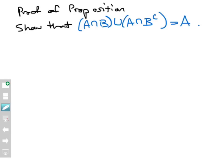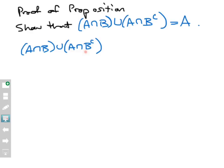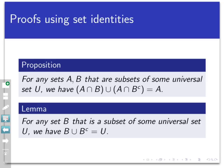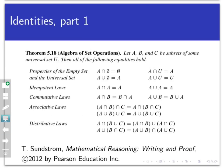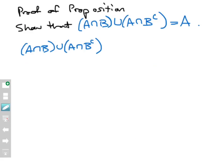Let's just think about the left-hand side: A intersect B union A intersect B complement. Think back to the distributive laws. I have the union of two intersections: A intersect B union A intersect B complement. Looking back at the distributive laws, the right-hand side of the distributive law property is exactly what we're looking at, except C here is being replaced by B complement. I had A intersect B union A intersect something else. The distributive law allows me to rewrite this as A intersect (B union B complement). That's true by the distributive property.